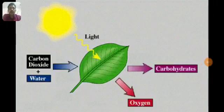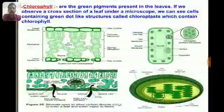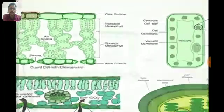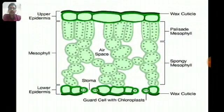In this video we will learn about chlorophyll and the functioning of stomata in detail. Chlorophyll are the green pigments present in the leaves. If we observe a cross-section of a leaf under a microscope, we can see cells containing green dot-like structures, which are called chloroplasts, and these contain the green pigment chlorophyll.